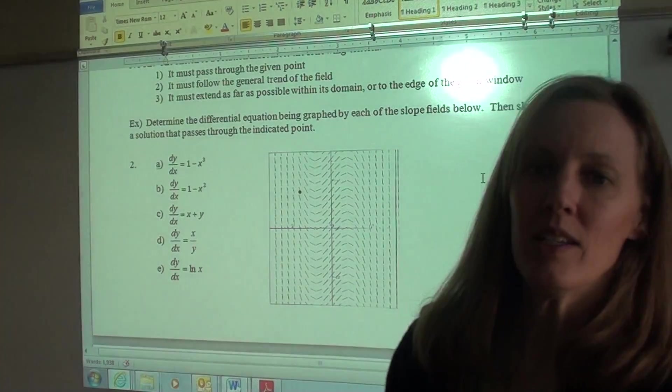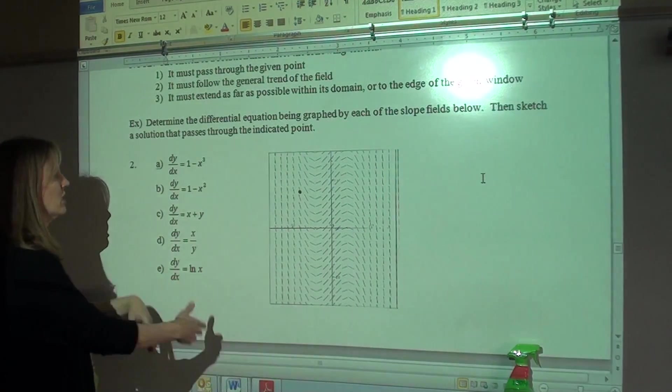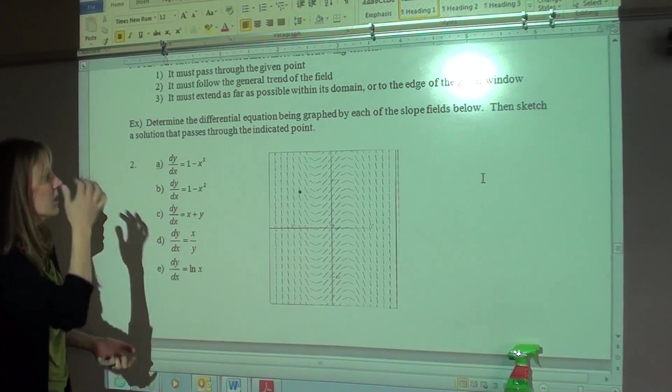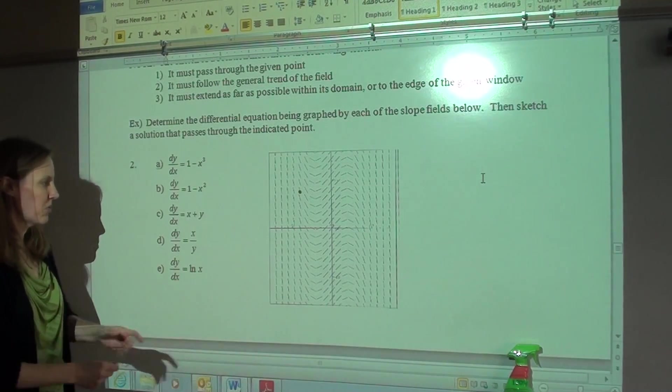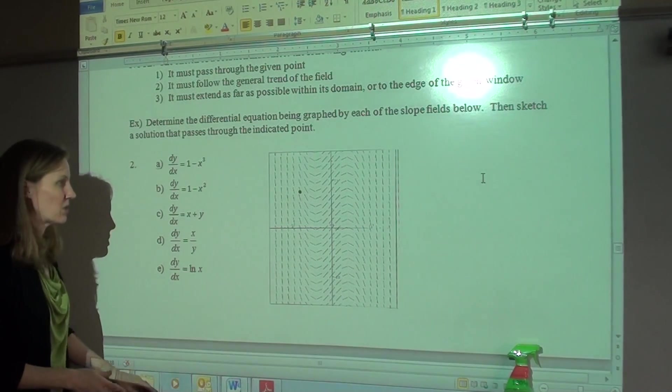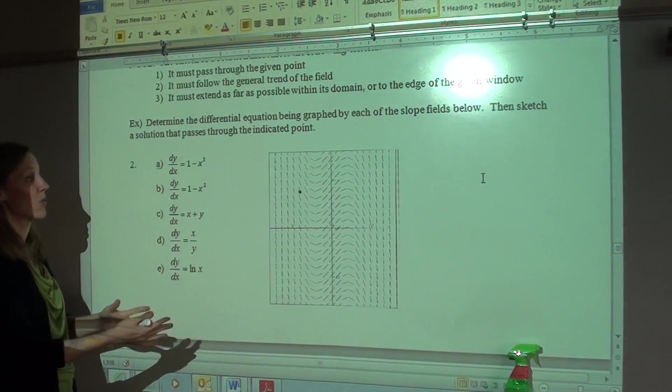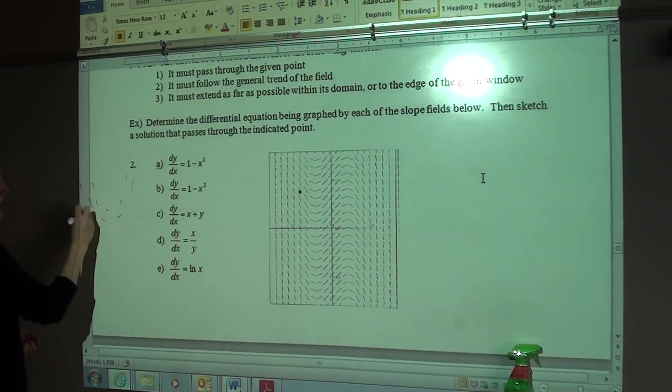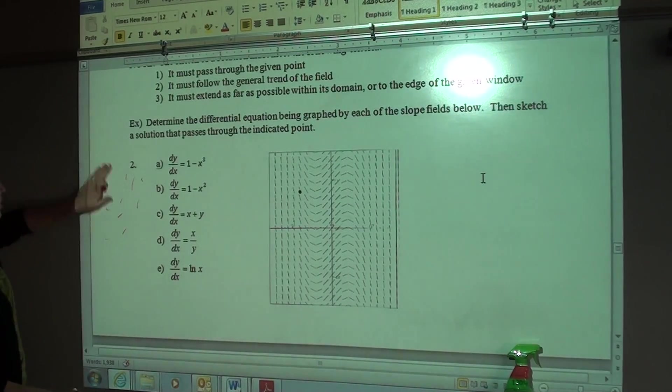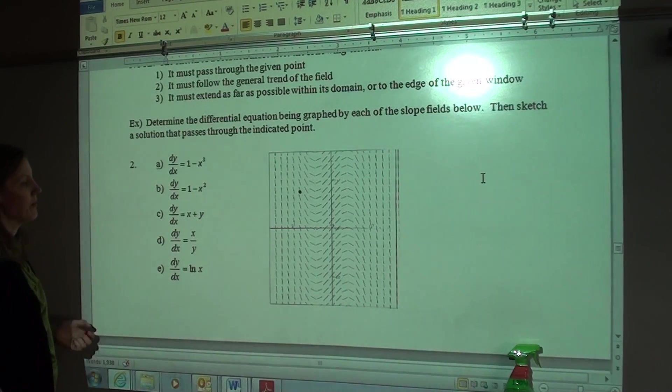So there you go. So the last thing we're going to talk about is how to match a differential equation with its slope field and how to sketch a solution. Right? When you're matching a differential equation to the slope field, I usually just do it by looking at the slopes themselves, picking a few points and seeing which ones work and which ones I can eliminate. Remember, you don't want to look at which one looks like the graph. If I have a slope field where all the slopes look like this, whoa, it's x squared would be a trap. Because it's not x squared, right?